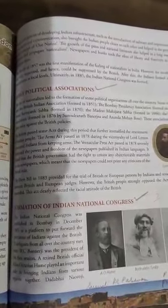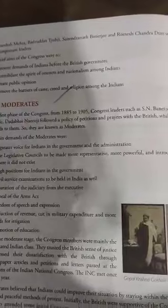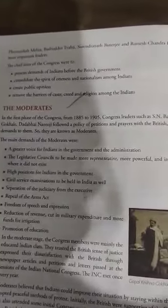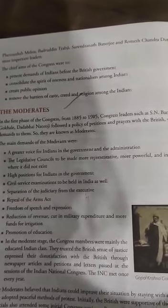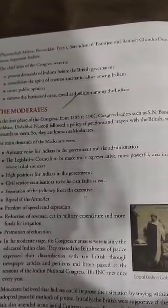The Indian National Congress was established in Bombay in December 1885 as a platform to put forward the grievances of Indians against the British. 72 delegates from all over the country met, and W.C. Banerjee was president of the first session. A retired British officer, Allan Octavian Hume, played an important role in bringing Indians from various regions together. Dadabhai Naoroji, Pherozeshah Mehta, Badruddin Tyabji, Surendranath Banerjee, and Romesh Chandra Dutt were some of the most important leaders. The chief aims of the Congress were to present the demands of Indians before the British government, consolidate the spirit of nationalism among Indians, create public opinion, and remove the barriers of caste, creed, and religion amongst Indians.